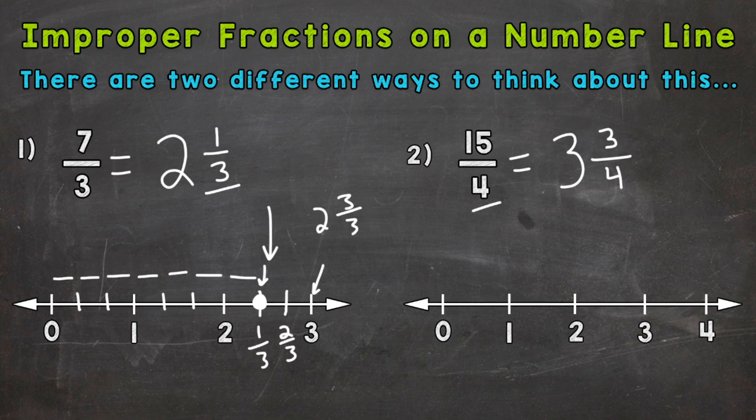So on our number line, our mixed number is going to be between three and four. So let's split into four equal sections or fourths between three and four because of our denominator here. So this would be three and one fourth, three and two fourths, or three and a half if you were to simplify, and then three and three fourths. So our fraction of 15 fourths and mixed number of three and three fourths would be right there.